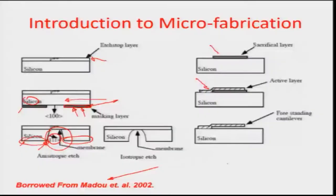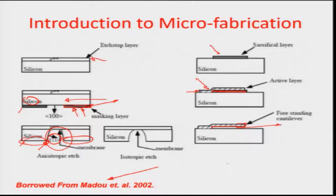There is a layer of mechanically robust material, and a polysilicon layer is deposited on top of a sacrificial layer which is then removed, causing a cantilever-like structure to emerge. This is how free-standing structures are made through microfabrication technique.